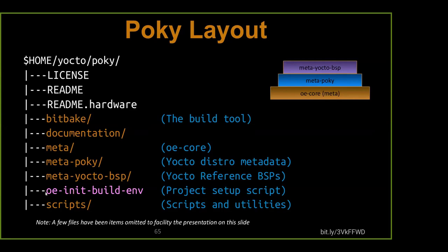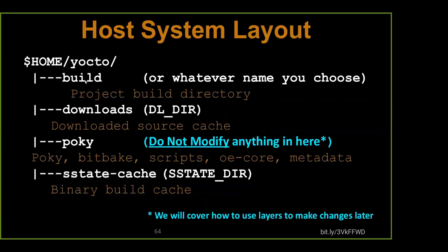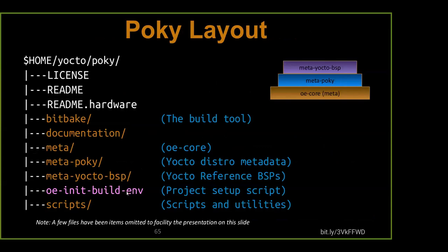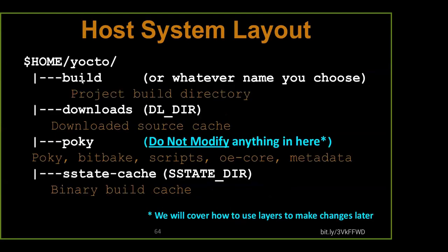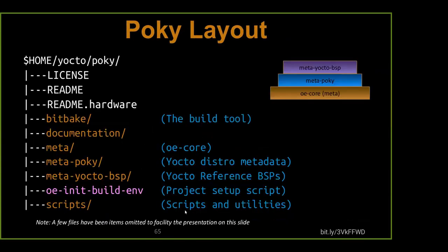We have an OE-init-build-env script. We're going to use this to set up all the environment variables — the initial ones — and then give it an actual build directory name. You're going to say the build directory will be x86, or maybe qemu-arm, or your foo machine, whatever it happens to be. You can also use some scripts and utilities — things like wic for creating images, and the run-qemu script that enables us to start a QEMU session.